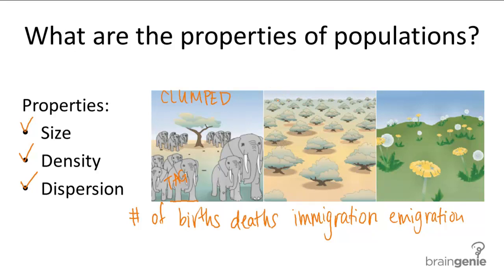Another pattern is called the uniform pattern of dispersion, where individuals are very evenly spaced from each other. This can happen in plants when plants secrete toxins into the soil around them to keep other plants away, so that other plants won't encroach on their space and nutrients. Another example of uniform dispersion is the penguin population, caused by aggressive interactions between penguins that cause them to keep a fairly safe distance from each other.